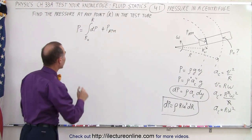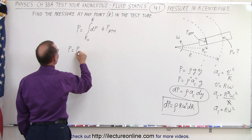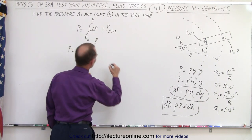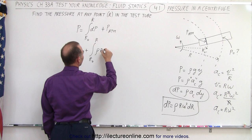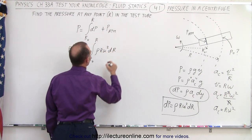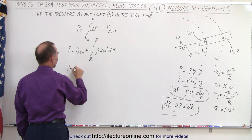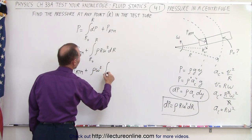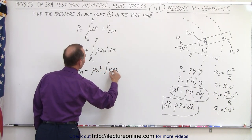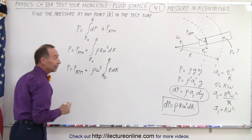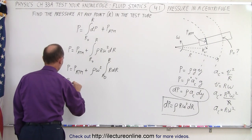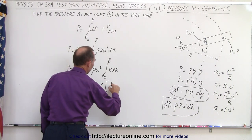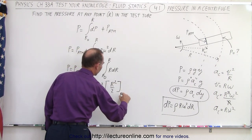So the pressure is going to be equal to atmospheric pressure plus the integral from r sub nought to r of dp, which is the density times r times omega squared times dr. I can pull some constants out of the integral, so pressure equals atmospheric pressure plus density times omega squared times the integral of r dr from r sub nought to r. Integrating gives pressure equal to atmospheric pressure plus density omega squared times r squared over 2, evaluated from r sub nought to r.